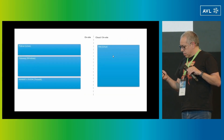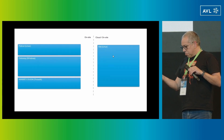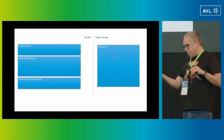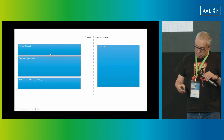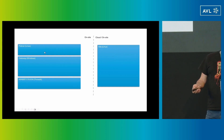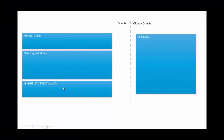In this demonstration, we are going to deploy a distributed edge application spanning multiple operating systems. To the right, we have Kubernetes. To the left, we have an ECU running on flight car OS, a Windows gateway, and an NXB board running on ThreadX. My application is comprised of multiple components. For Kubernetes, I want to deploy a pod. For the flight car system, I want to deploy a WebAssembly module and an eBPF module. And for the Windows gateway, I want to deploy a Windows application.